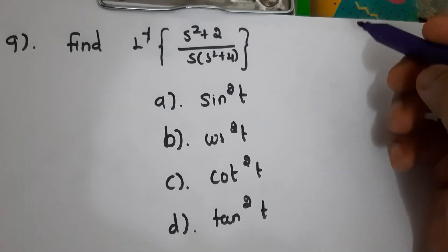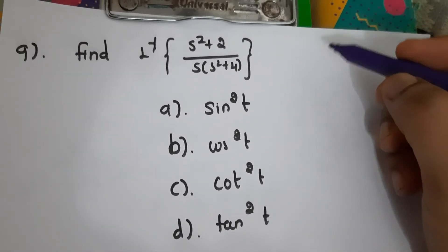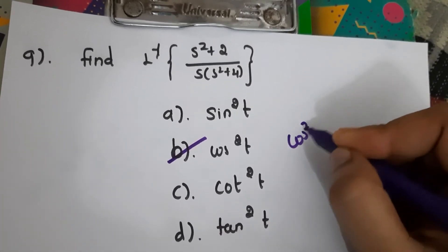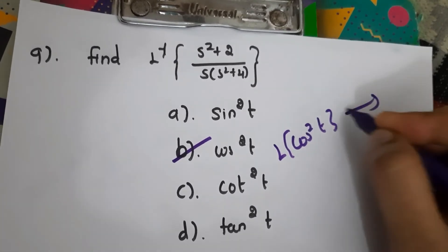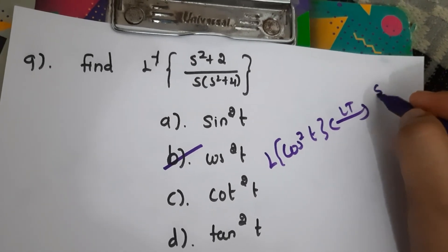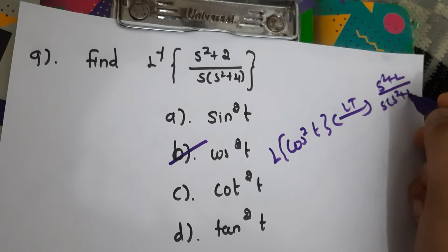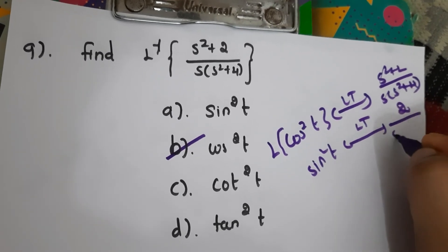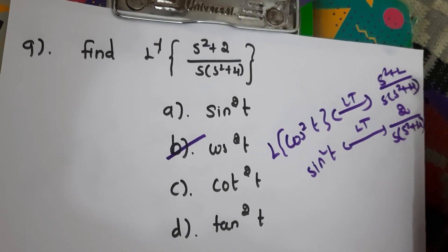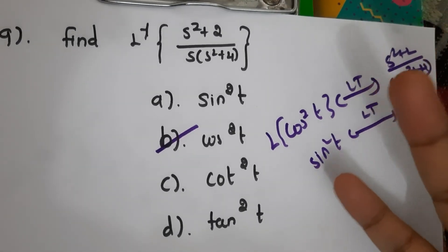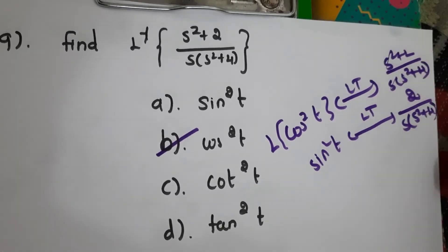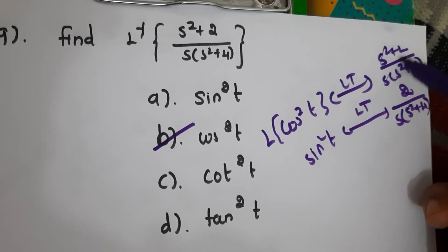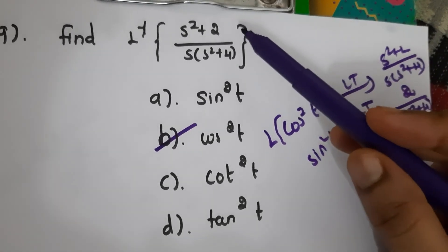Ninth question: find the inverse Laplace transform of (s² + 2)/[s·(s² + 4)]. The answer is cos²(t), because the Laplace transform pair for cos²(t) is (s² + 2)/[s·(s² + 4)]. For reference, the Laplace transform of sin²(t) is 2/[s·(s² + 4)]. The answer is B.